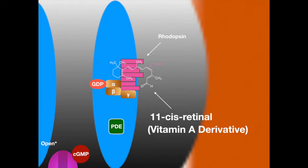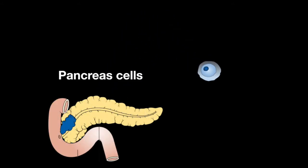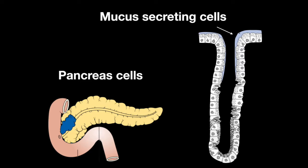Vitamin A deficiency makes the eye less sensitive to light, leading to nyctalopia, or night blindness. Vitamin A is also essential for the differentiation of epithelial cells, like pancreatic tissue and mucous-secreting cells.